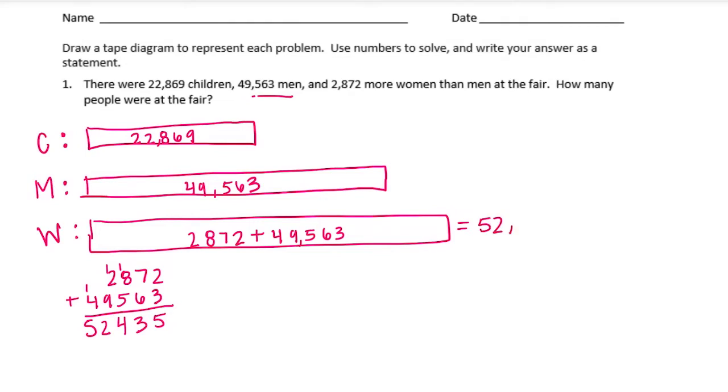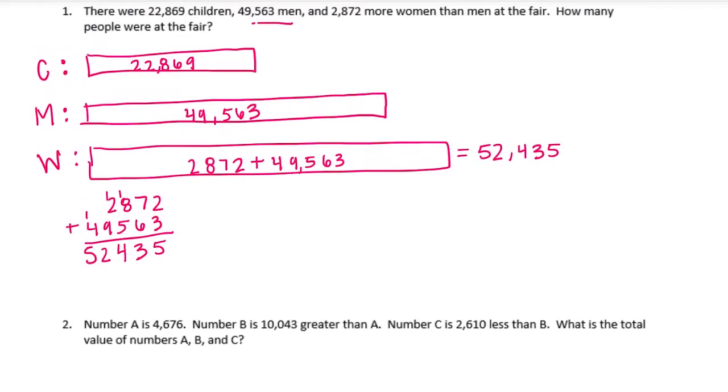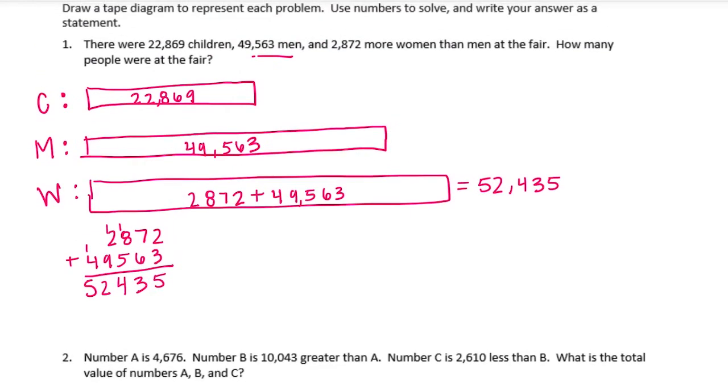Now we need to add everyone together. So I'm going to start by adding the children and the men. So we have 22,869 plus 49,563. 9 plus 3 is 12, carry the 1. 1 plus 6 is 7, plus 6 is 13, carry the 1. 1 plus 8 is 9, plus 5 is 14, carry the 1. 1 plus 2 is 3, plus 9 is 12, carry the 1. 1 plus 2 is 3, plus 4 is 7. So children and men is 72,432.